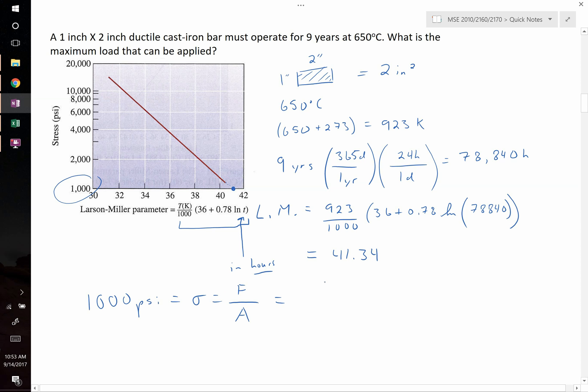Stress equals force over area, or the load over the area. We'd like to solve for our load F, which is going to be over 2 inches squared equals 1000 pounds per square inch. We solve for F and find that F equals 2000 pounds.